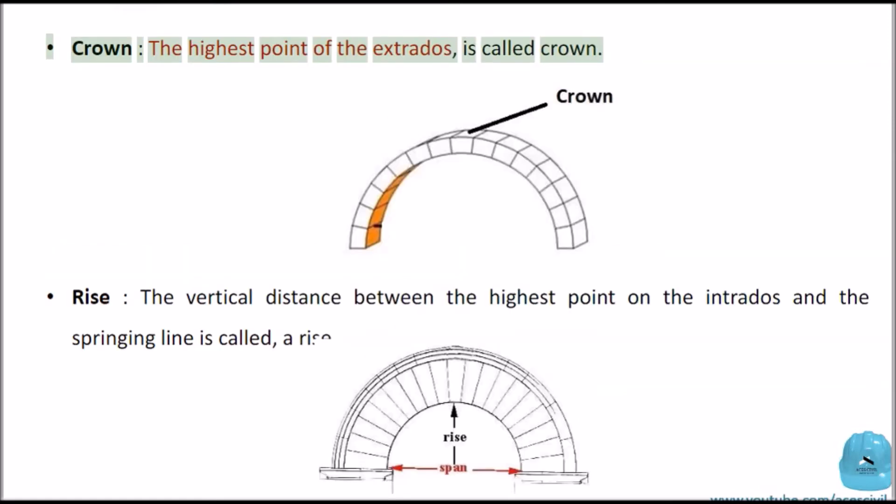Crown: The highest point of the extradose is called crown. Rise: The vertical distance between the highest point on the Intradose and the springing line is called a rise.